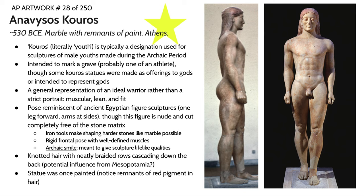Our next work is the Anavisos Kouros. Kouros is a word in Greek that means youth — basically a young man. Kouros is typically a designation used by archaeologists for sculptures of male youths made during the Archaic period. They're very canonized in their appearance, oftentimes with this very rigid frontal pose, staring straight ahead. The hands are at the sides or in a very simple gesture, and they're very conservative in terms of not having too much negative space.